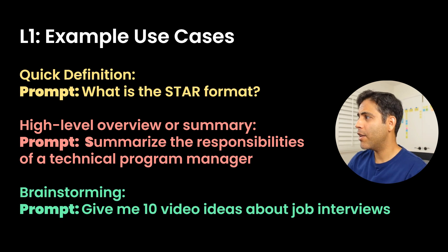Another example is using it for initial stages of brainstorming: 'give me 10 video ideas about job interviews.' Level 2 — let's say you want your AI output to look or sound a certain way. For example, a table format, a bullet point format, or an email in a professional tone. This is where constraints come in.